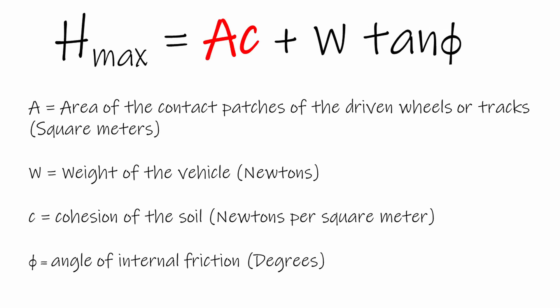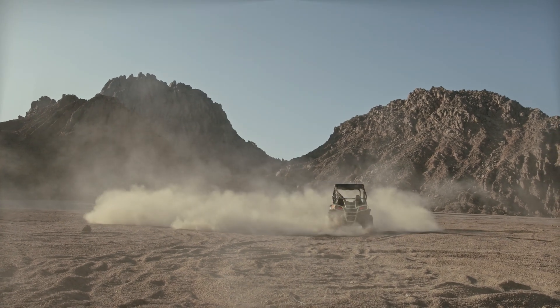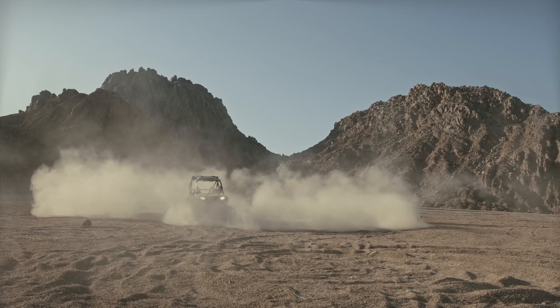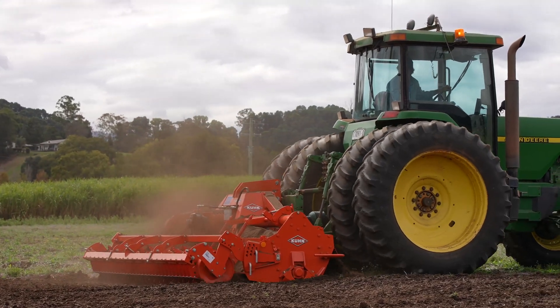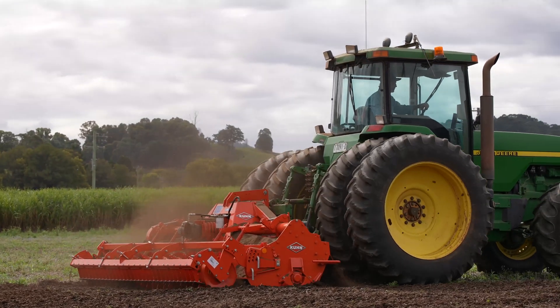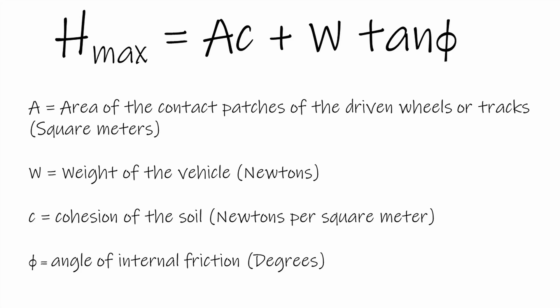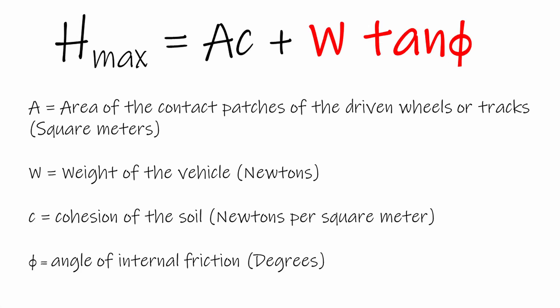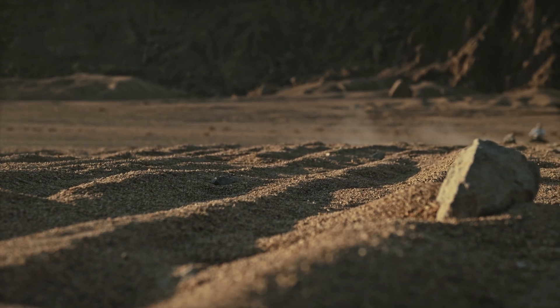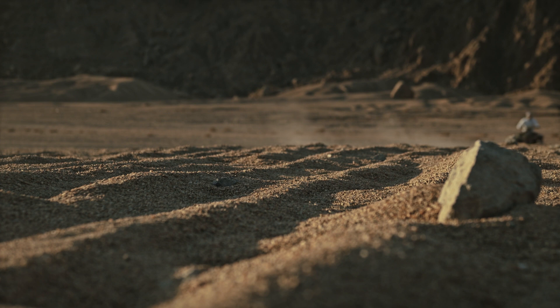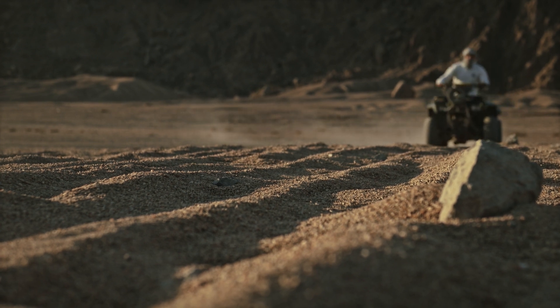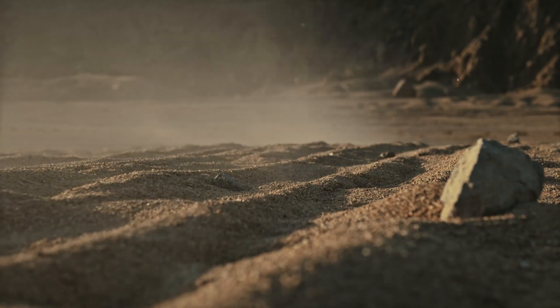Micklethwaite multiplied the contact area, referred to as A, by the cohesion C to calculate the amount of traction available through pure cohesion. On dry sand that will be zero, but on a soil that contains clay, you can increase the amount of traction available by increasing the size of the contact patch, and thus grab a bigger area of the ground with the tyre or track cleats. Micklethwaite then added the weight of the vehicle W, multiplied by the tan of the angle of internal friction phi, to give the amount of traction available through friction. On a sandy soil, phi might be 40 degrees or more, providing a traction force of 84% of the weight of the vehicle. So on a sandy soil, by making the vehicle heavier, you can increase the amount of traction available.